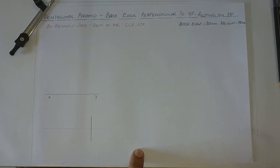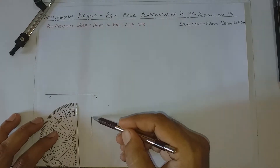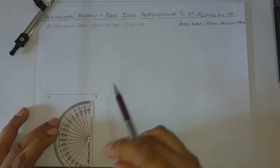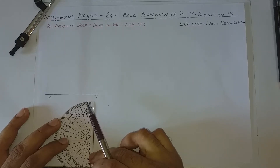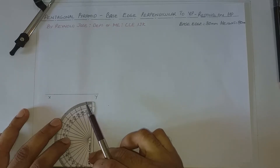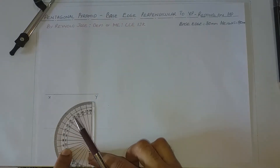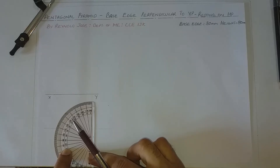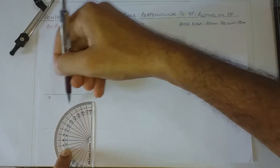Now using your protractor from any one of the ends of this line, let us take an angle of 54. What is the significance of 54? 54 is the half included angle of a pentagon. The included angle of a pentagon is 108, and half of it is 54. So from one of the ends, I am going to take an angle of 54.